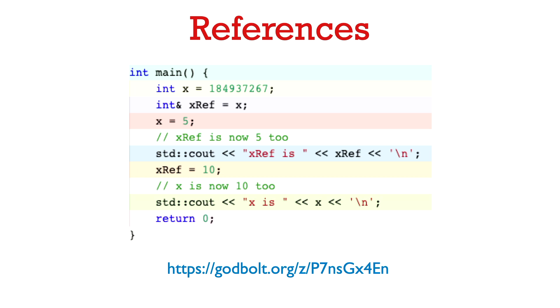So this next line, when we print out xref, we'll print out the value 5. On the other hand, if we change xref to be 10, then when we print out x in the following line, then its value is now going to be 10. And you can play with this code yourself on Godbolt.